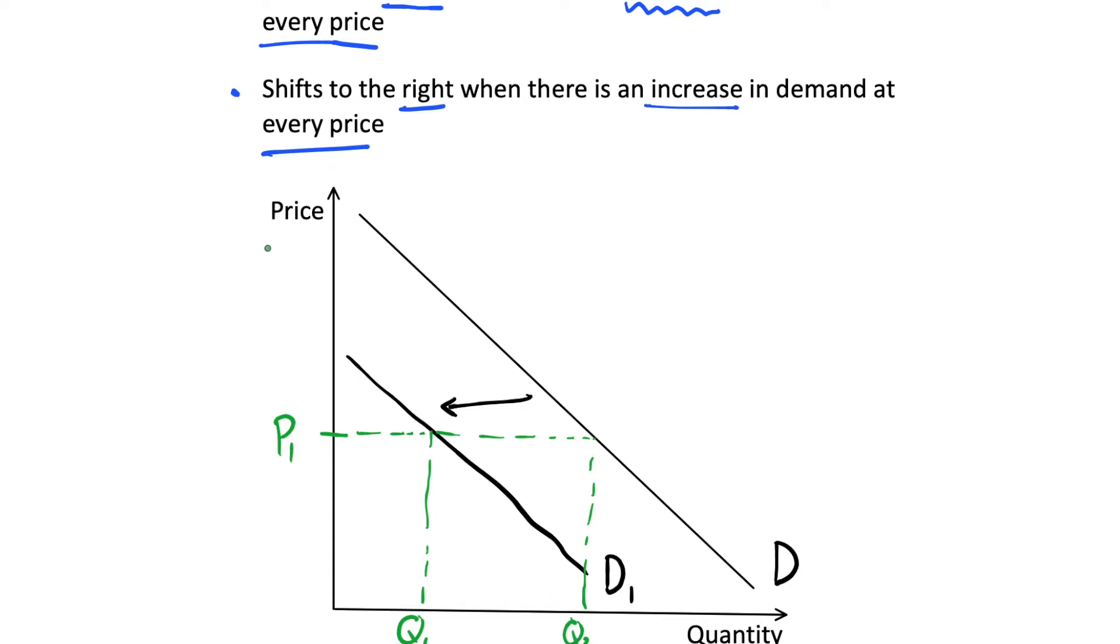And clearly for demand curve D1, there is a decrease in demand. And this will be true at every price if we were just to see every single price. Clearly the points on demand curve D1, they're all going to be less, there's going to be less demanded at each price. And so that's what a shift to the left does.